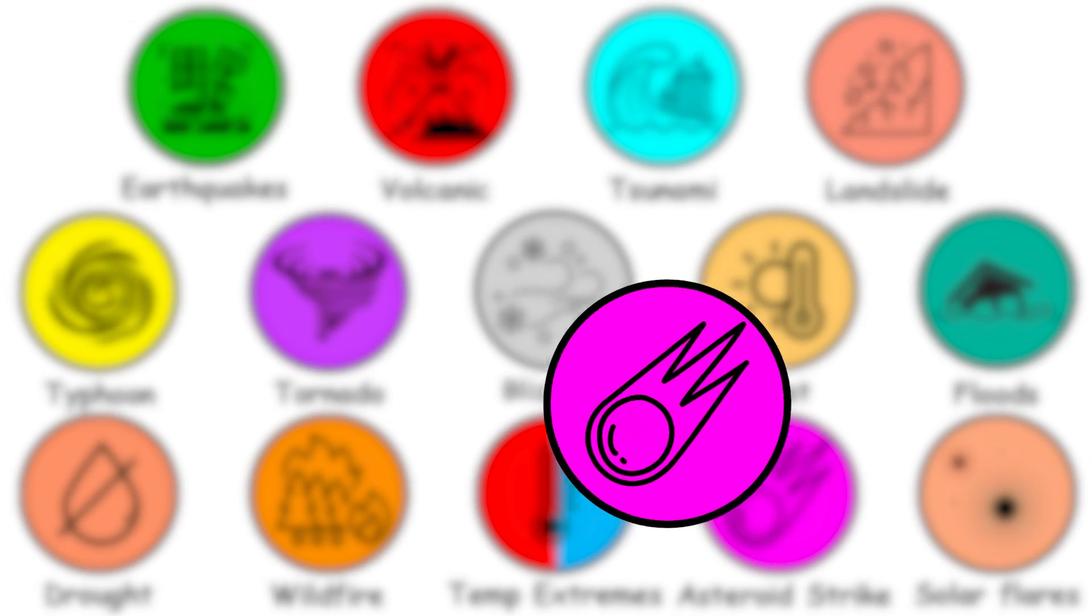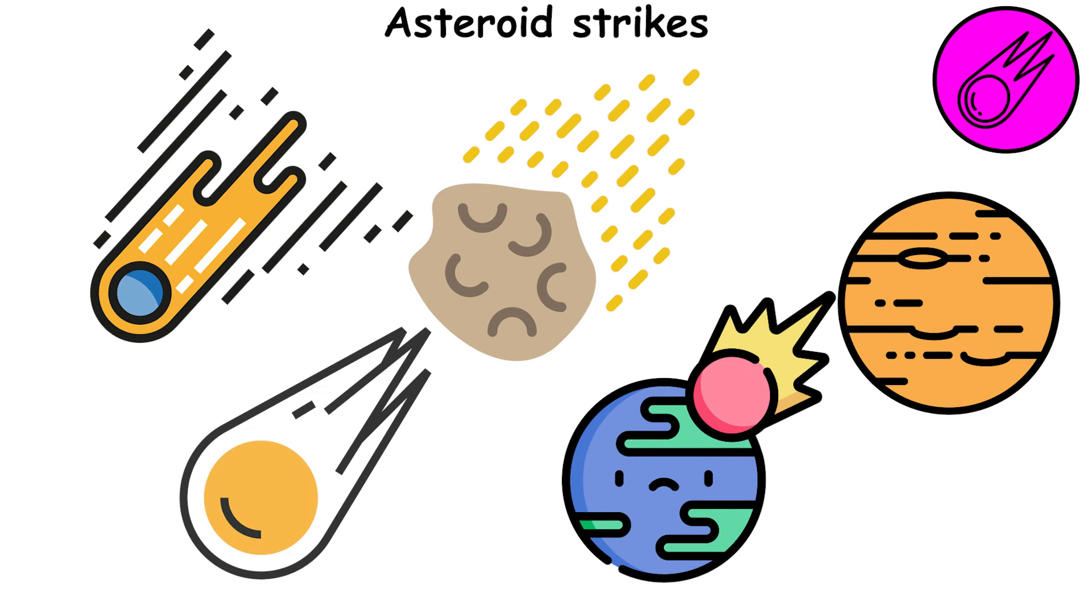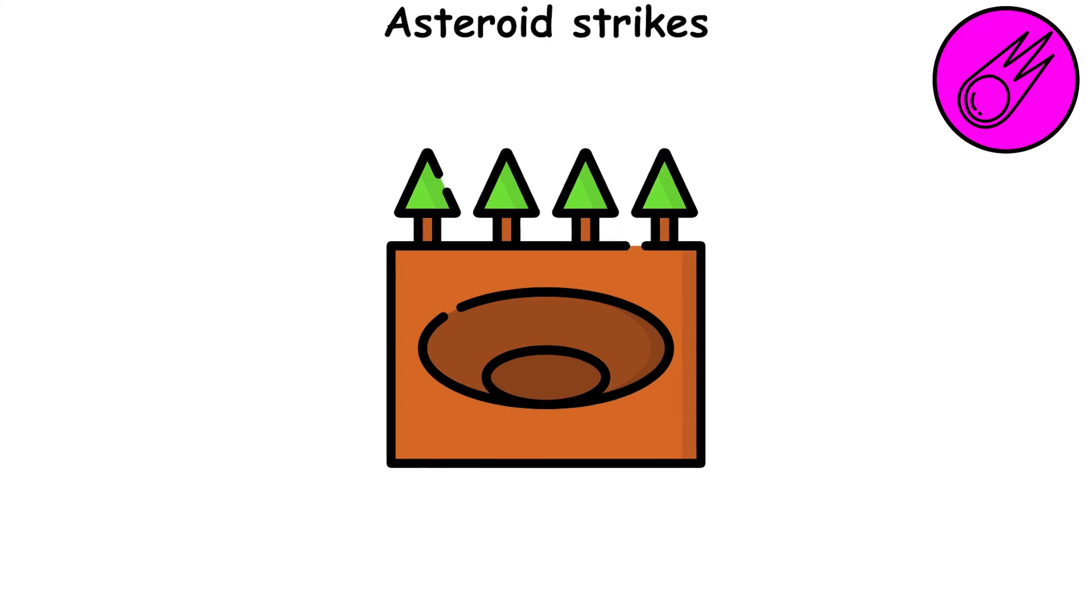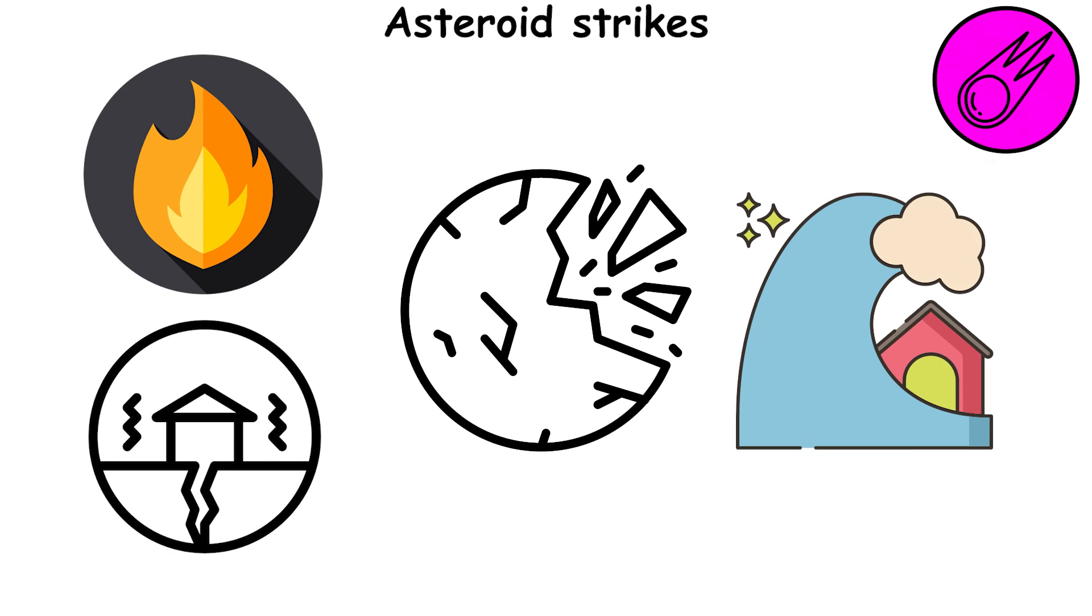An impact event is the collision of a large meteorite, asteroid, comet, or other celestial body with Earth or another planet or satellite. This collision usually results in the formation of a crater. Impact events can be very destructive, as they can cause fires, earthquakes, or tsunamis.